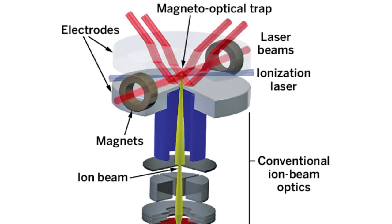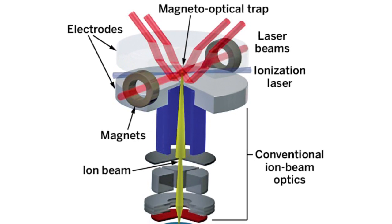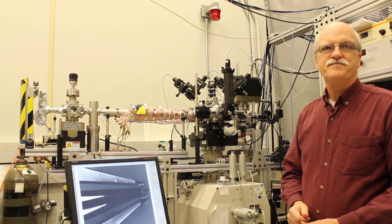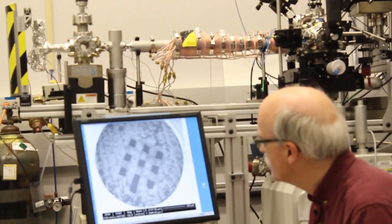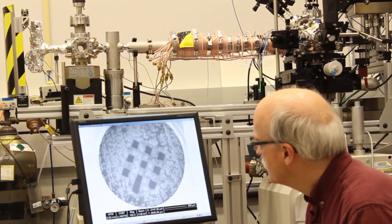Once they're in that trap, you bring another laser in which ionizes them, and then they get sucked by an electric field down the tube into the microscope. They go through the microscope, they get focused, they get deflected and scanned, and we can make images with them.